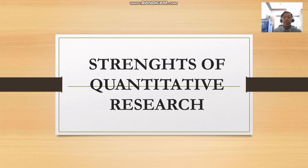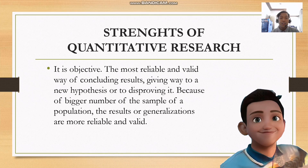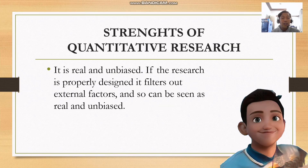So now let's go to the strengths of quantitative research. The first strength is that it is objective — the most reliable and valid way of concluding results, giving way to new hypotheses or disproving them. Because of the bigger number of the sample population, the results or generalizations are more reliable and valid. Since it provides numerical data, it can be easily analyzed. The use of statistical techniques facilitates sophisticated analysis and allows you to comprehend a huge amount of vital characteristics of the data. It is also real and unbiased — if the research is properly designed, it filters out external factors and can be seen as real and unbiased.